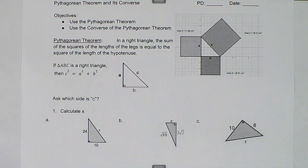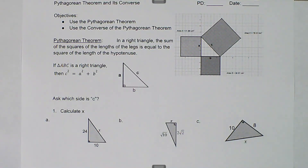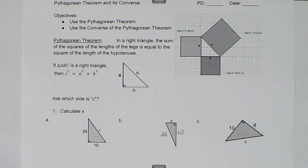We are talking about the Pythagorean Theorem and its converse. The Pythagorean Theorem states that in a right triangle, the sum of the squares of the lengths of the legs is equal to the square of the length of the hypotenuse. The first thing you have to identify is which sides are the legs and which one is the hypotenuse.